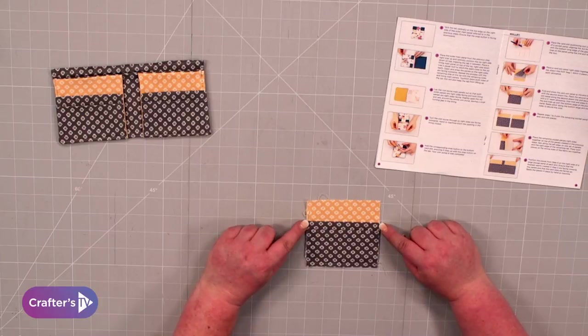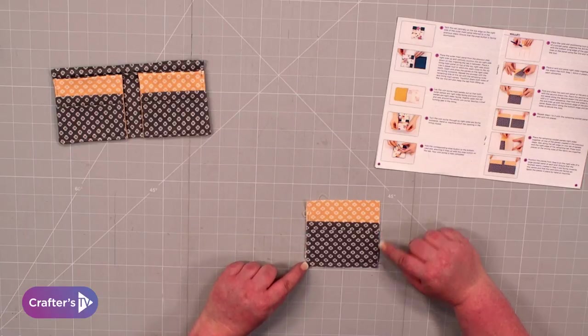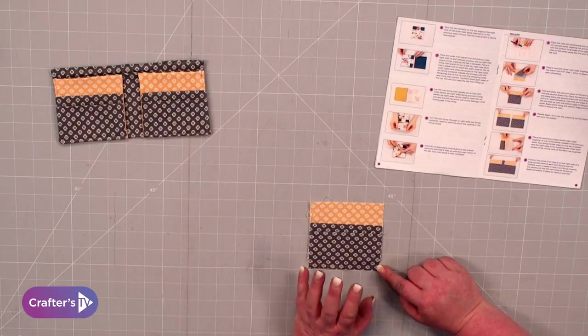Once you've got it flush with the bottom, you're going to do a basting stitch. A basting stitch is a long stitch on your machine, stitching close to the very edge, just tacking it in place to hold it.